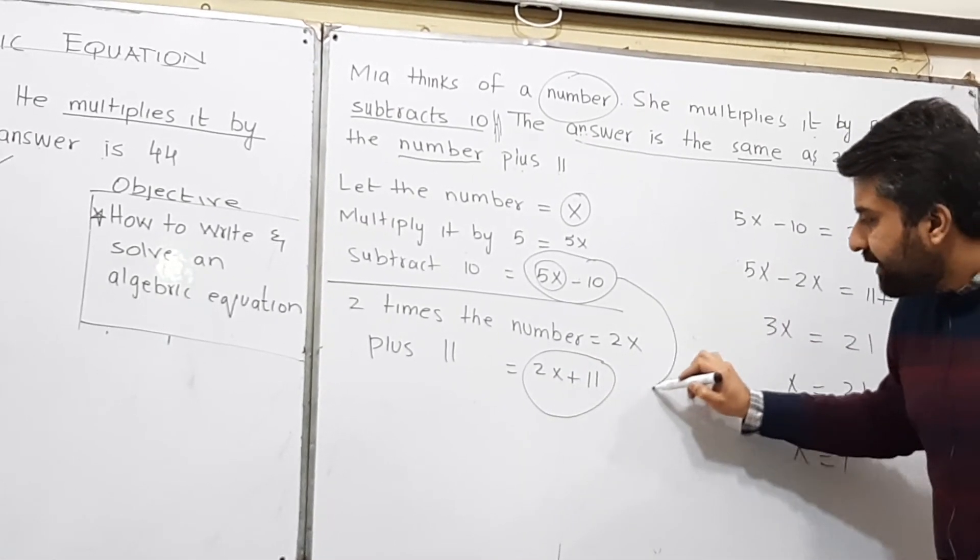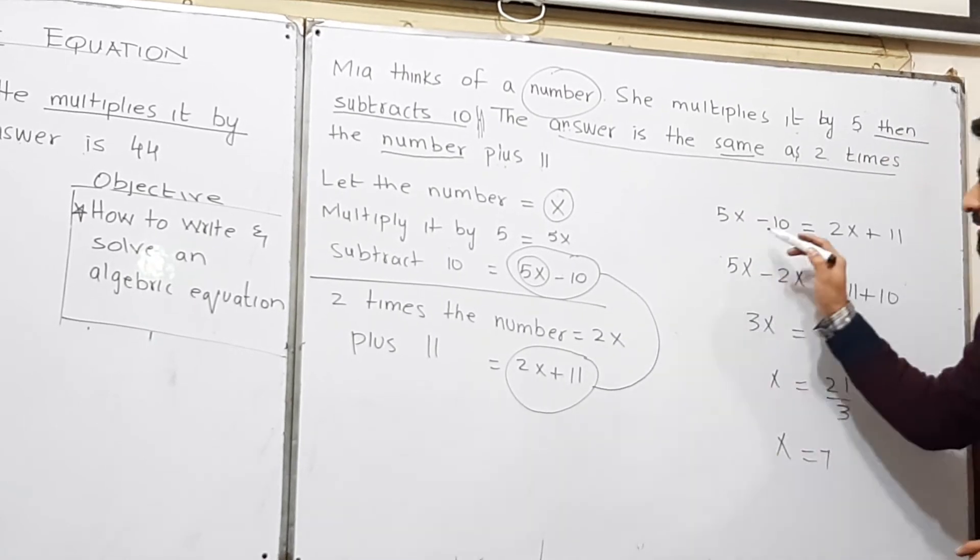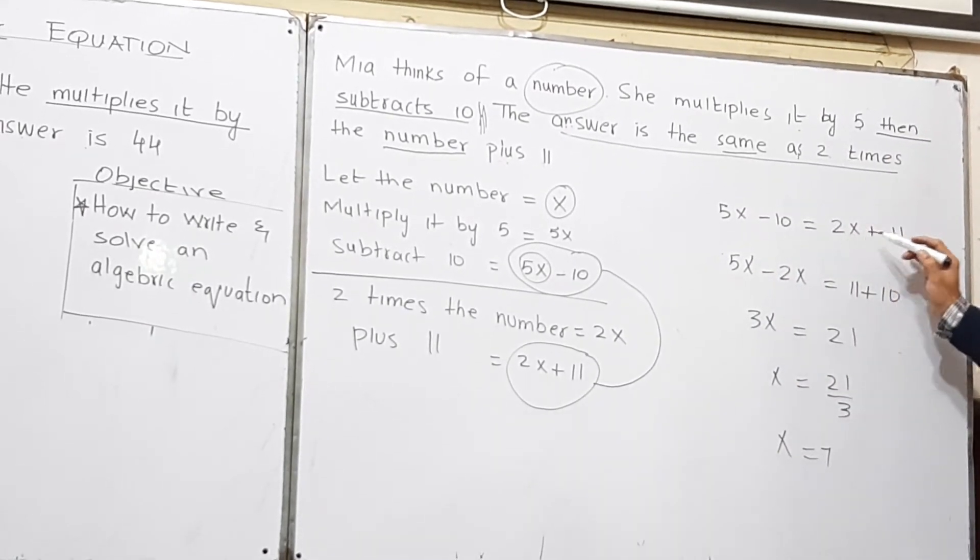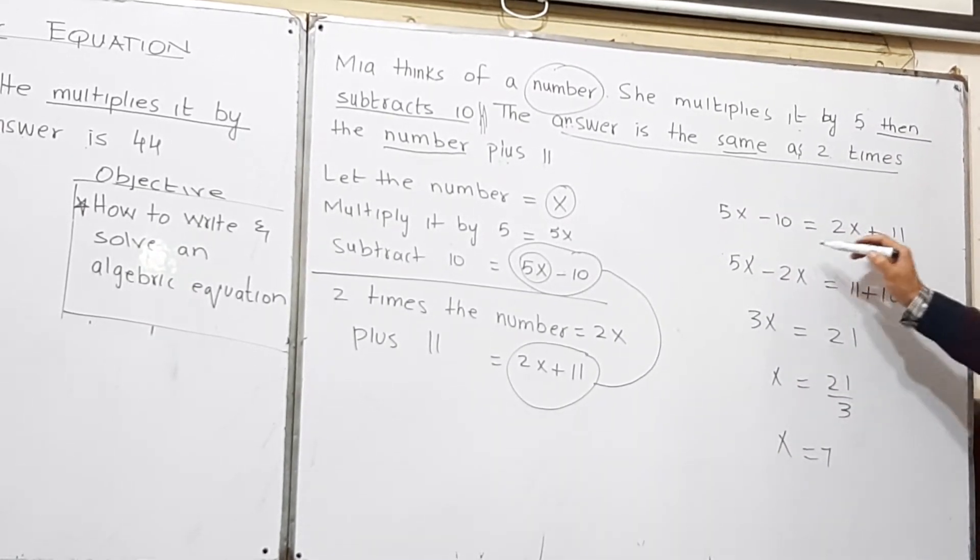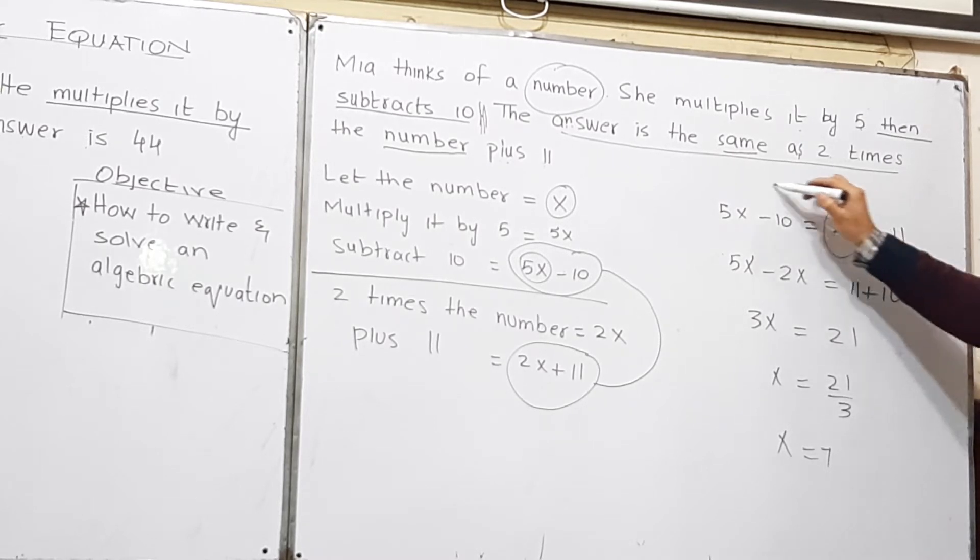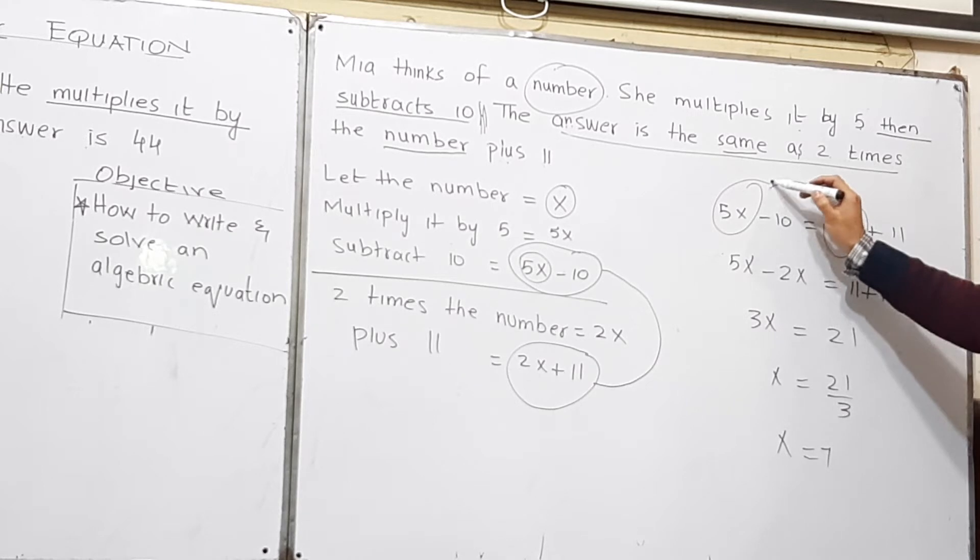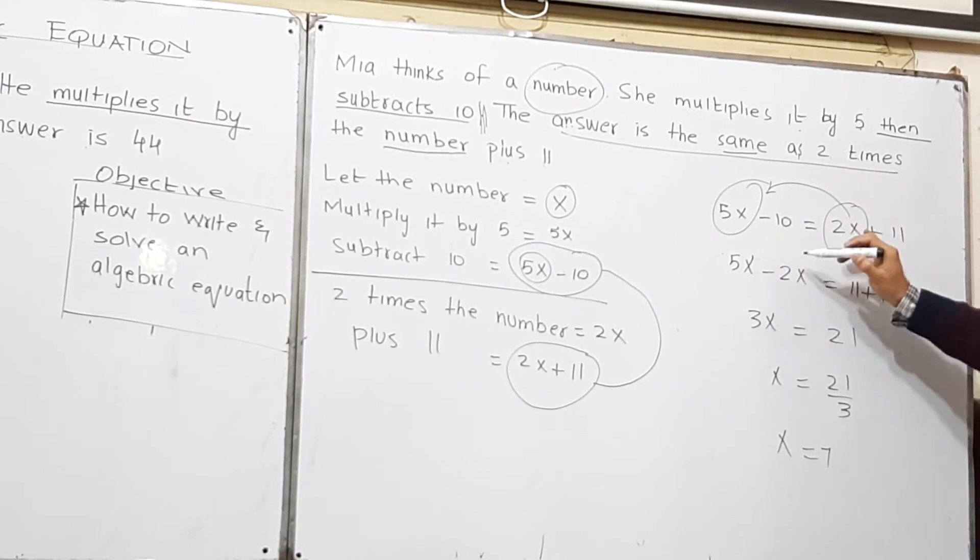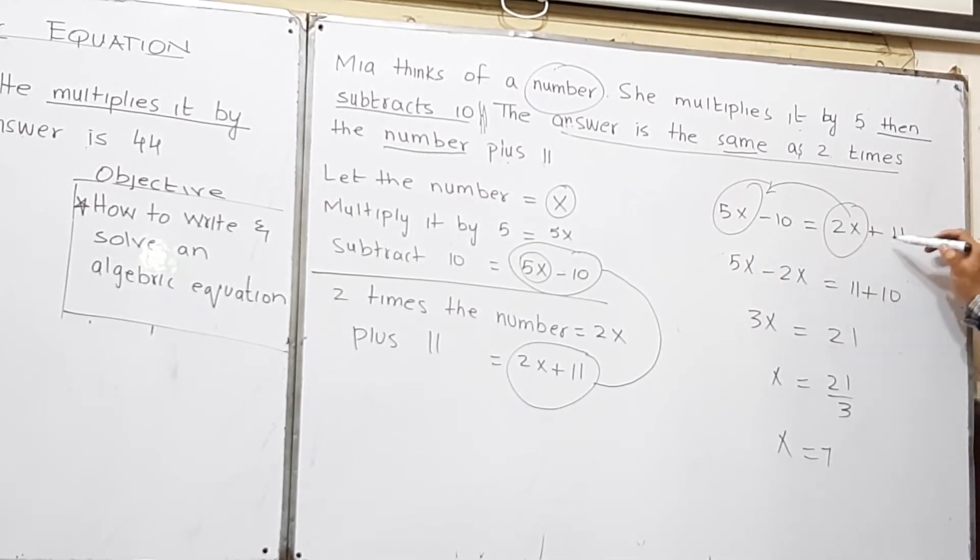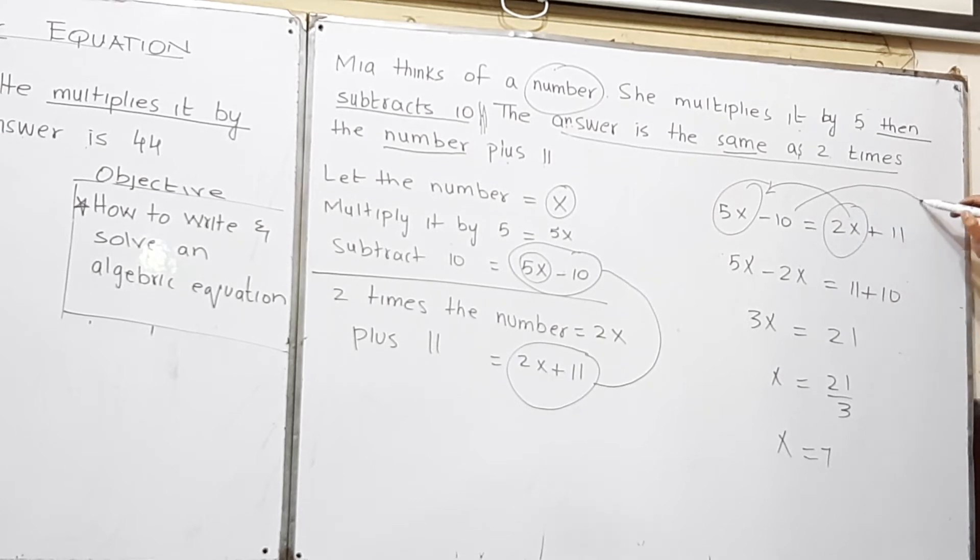We are going to equate these two. 5x minus 10 is equal to 2x plus 11. From here, move like terms on one side, meaning the terms having x. So 2x will be going on this side. 5x minus 2x equals 11. Move 10 on this side, it will become plus 10.